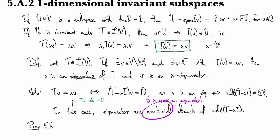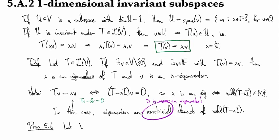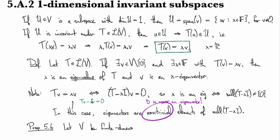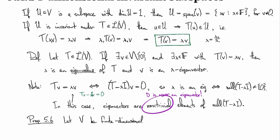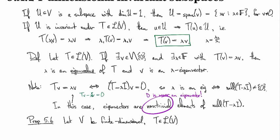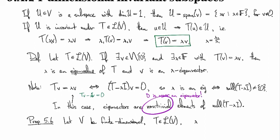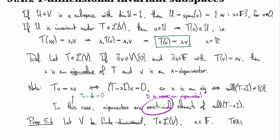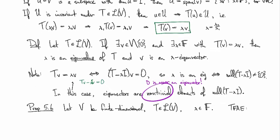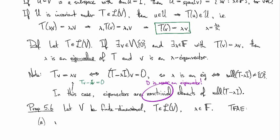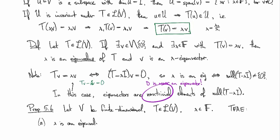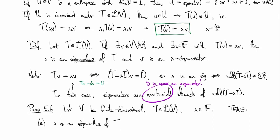Then we have Proposition 5.6. Suppose V is finite dimensional and we have an operator T on a finite dimensional vector space. Let lambda be a scalar. Then the following are equivalent: lambda is an eigenvalue of T.